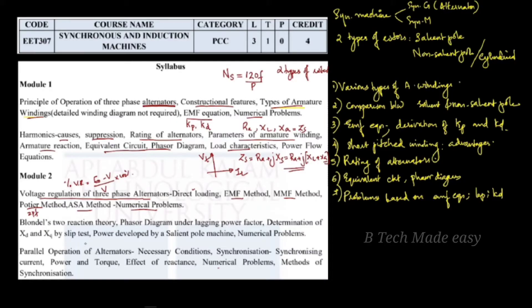Blondel's two-reaction theory states that a machine has two reactions. If you use a cylindrical rotor machine — a non-salient pole machine — the air gap is uniform. Because it is uniform, the reactance does not depend on the position of the rotor.